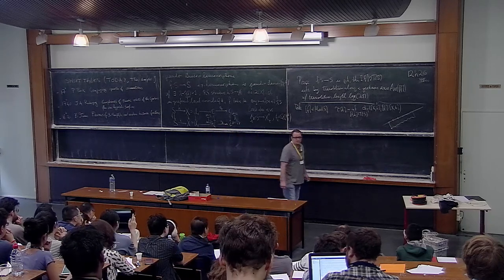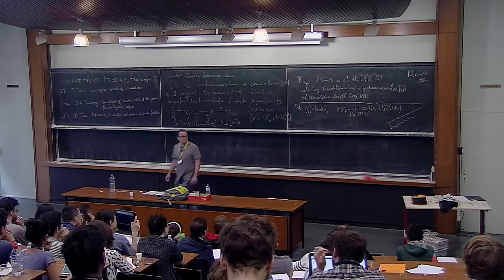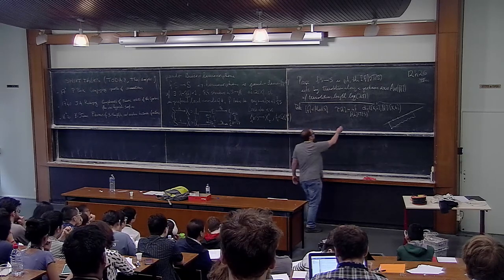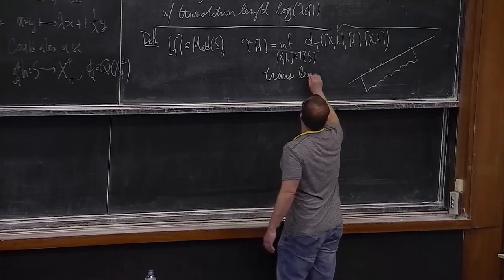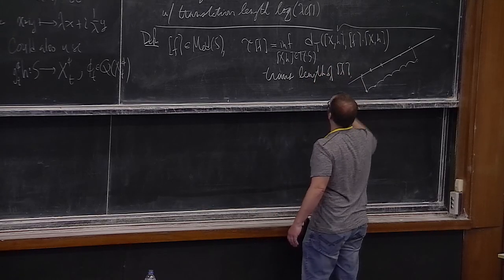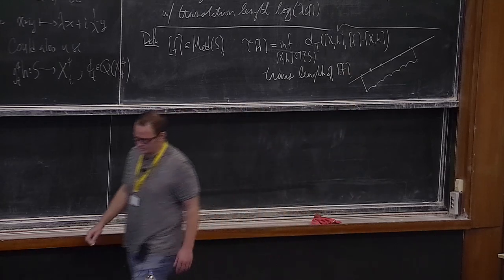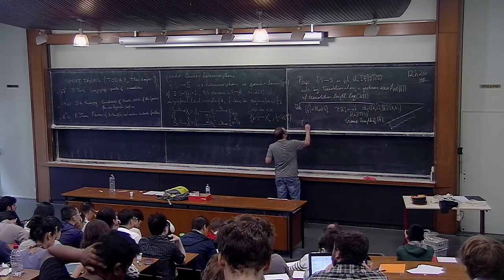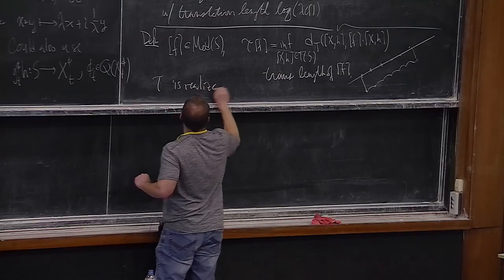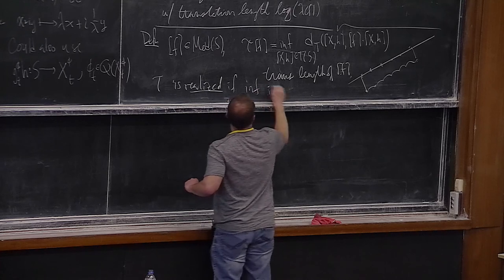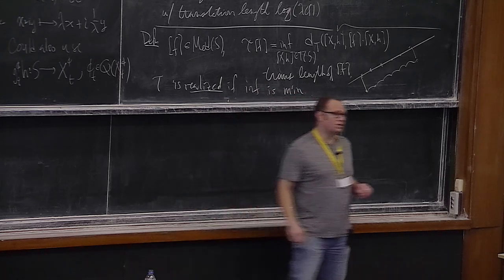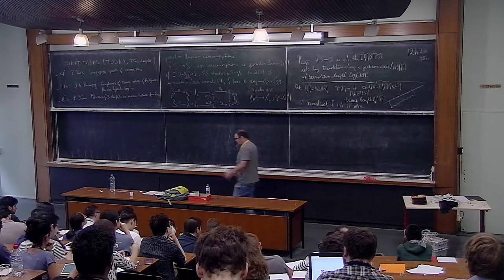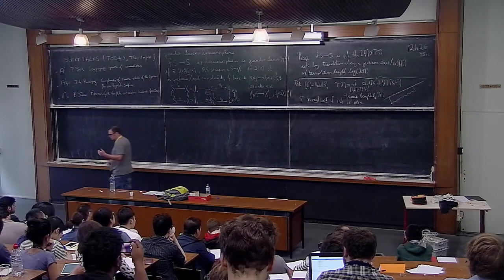One way of thinking about the Thurston–Nielsen classification is exactly following that analogy. This is called the translation length of F. Let me make another definition: we say tau is realized if the infimum is actually a minimum. Even for isometries of the hyperbolic plane, there's a classification into elliptic, hyperbolic, and parabolic. Parabolic transformations move points smaller and smaller distances — the translation length is zero, but no point is actually moved a distance zero. There are no fixed points in the hyperbolic plane for a parabolic transformation.